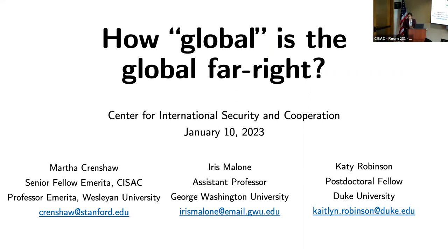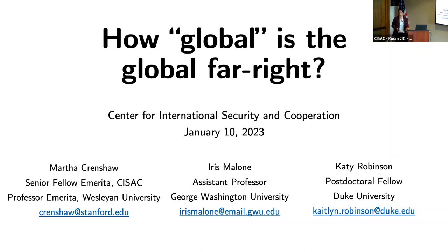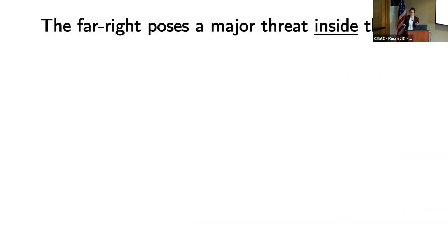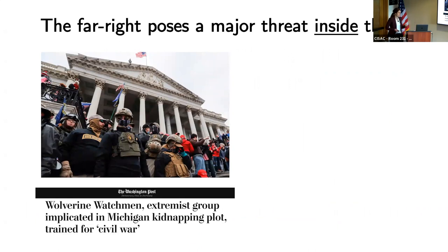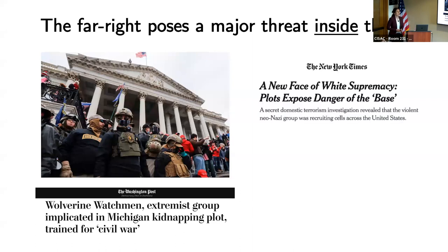We're excited to present some of the conceptualization and data collection work we've been doing with the Mapping Militants Project focused on the global far right — specifically thinking about how global this movement actually is and how connected these individual elements are. The far right poses a major threat inside the United States, most obviously shown by the January 6th attack, but also the plot to kidnap the Michigan governor by an anti-government militia and many other recent attacks.